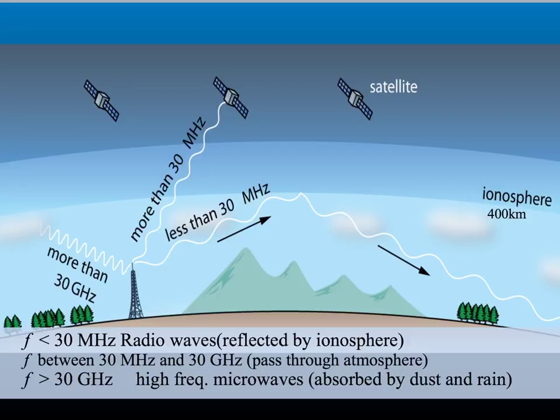Radio waves are part of the electromagnetic spectrum. They have the longest wavelength and the lowest frequency. When radio waves approach the ionosphere, they are reflected back from it, like light reflecting back from a mirror. Radio waves with a frequency lower than 30 million hertz, or 30 megahertz, are reflected back towards the Earth.